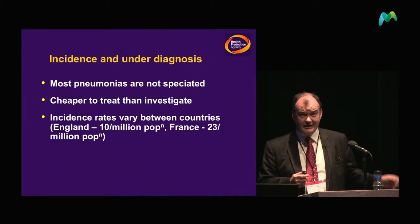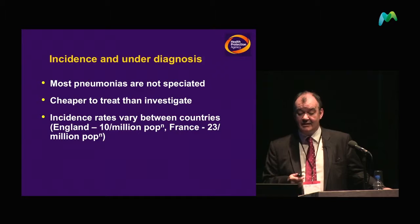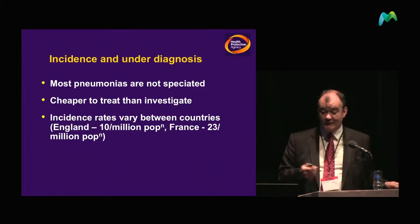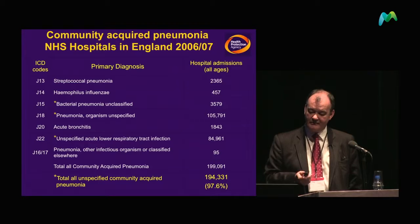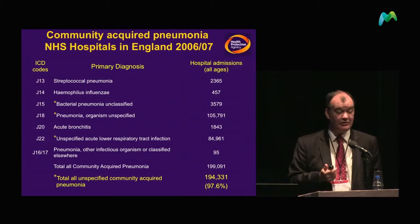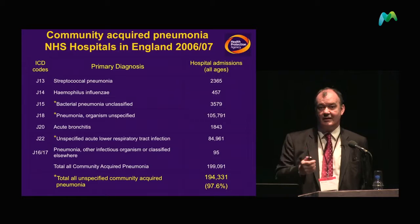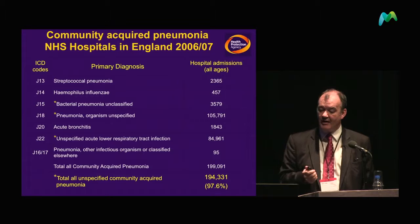It's probably vastly underdiagnosed, and there are two reasons for that. One — it's often cheaper to treat than investigate. This is community-acquired pneumonia data from HES, and you'll see that of 194,000 unspecified community-acquired pneumonias, these are instances where patients were simply treated without investigation.